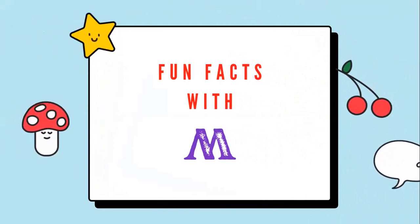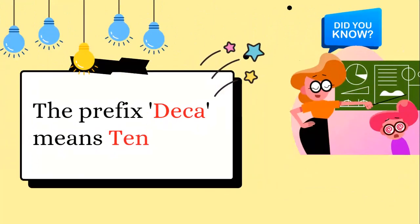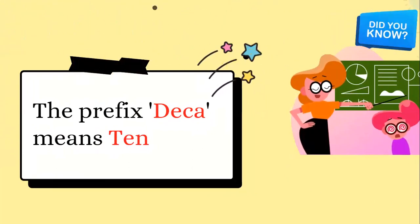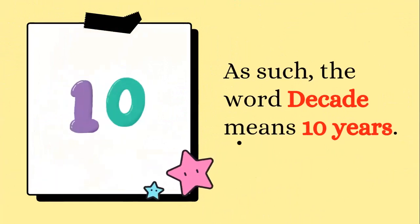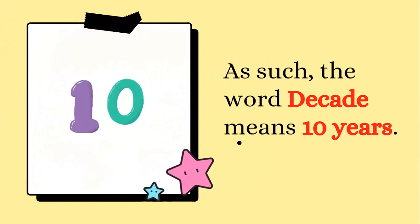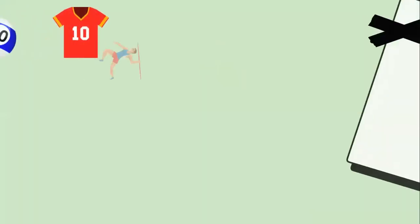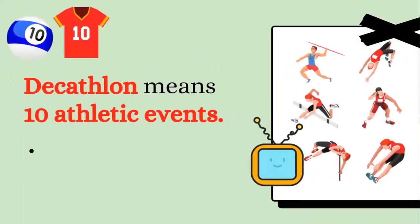It's time for fun facts! Did you know the prefix 'deca' means ten? As such, the word 'decade' means ten years, 'decagon' means a ten-sided shape, and 'decathlon' means ten athletic events.